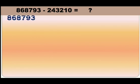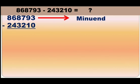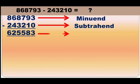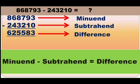Here in this example, this is the greater number or the number from which we subtract the other number. So, this greater number is called minuend. And here, this is the smaller number or the number to be subtracted, so this smaller number is called subtrahend. Now, when these two numbers are subtracted, the result which we get after subtraction is called difference. Thus, we have: minuend minus subtrahend is equal to difference.